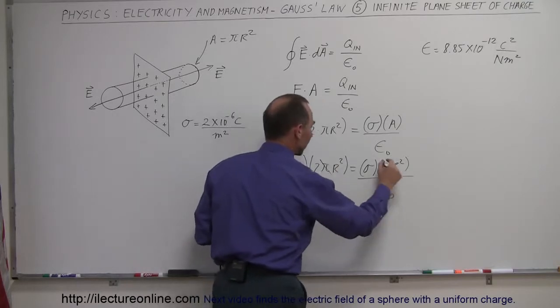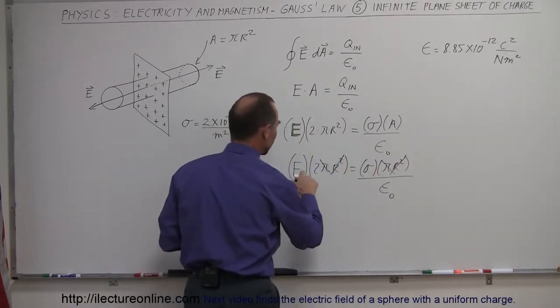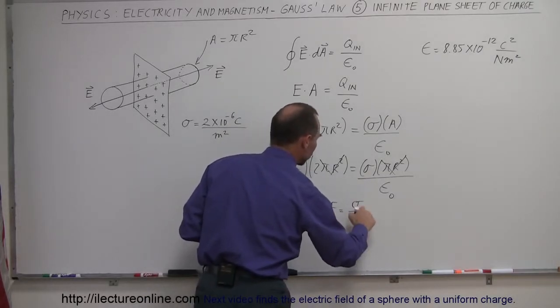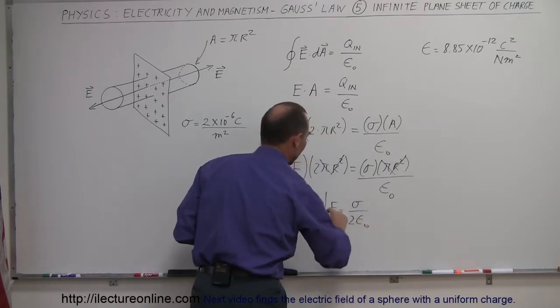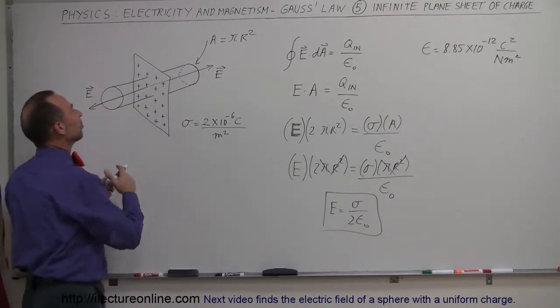So the pi cancels out the pi, the r squared cancels out the r squared. And we're left with 2 times E equals this, or E equals sigma, the charge density per unit area, divided by 2 times epsilon sub nought. And that would be the electric field strength outside an infinite sheet.